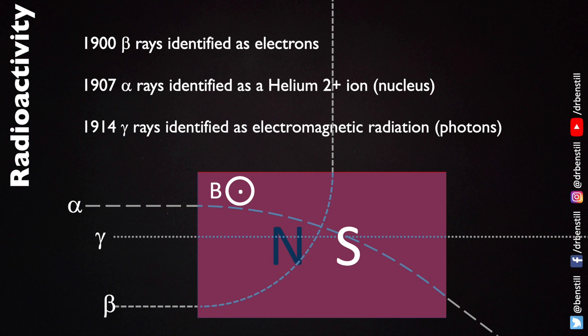Alpha, beta and gamma are the first three letters of the Greek alphabet. But you'll notice they weren't named in the order in which their nature was discovered. They were named actually in the order in which they penetrate materials.